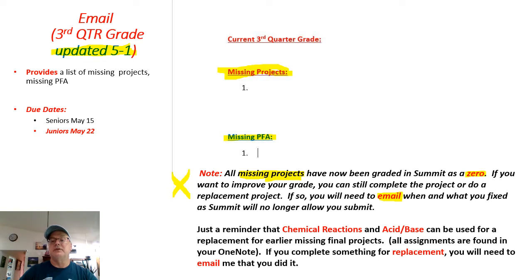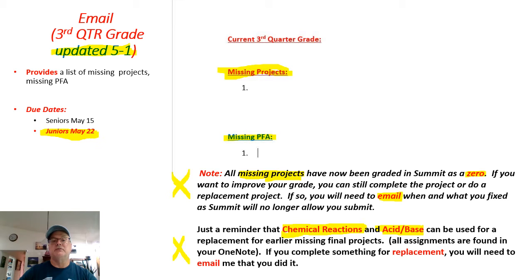Also, a reminder that if you need replacement work because you can't fix an assignment, there are two units that have replacement assignments: the chemical reaction mastery worksheet and the acid base unit, which has quite a bit you can use for replacement work. If you want to clear an incomplete or erase a low grade like a D, C, or B, you can do these replacement assignments. Do remember that because of a calendar change by the district, juniors now only have until May 22nd to complete their work. Seniors, you're still on the May 15th due date.